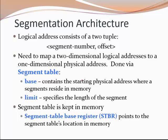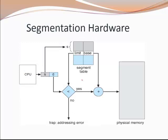Every process has its own segment table, and the segment table is a data structure — it is not hardware. This is the segmentation hardware in which the CPU generates the logical address and we map that logical address with the help of segmentation. This is a complete diagram with the memory protection hardware. First, the CPU generates the logical address, which has two tuples: segment number and segment offset.